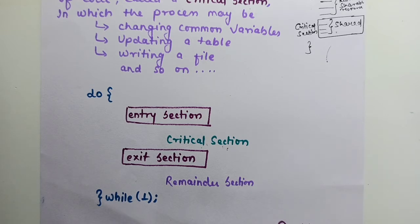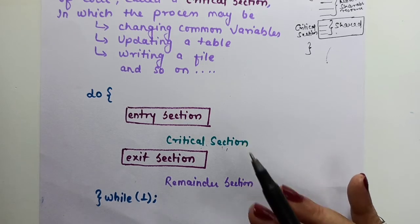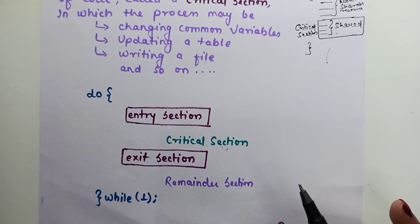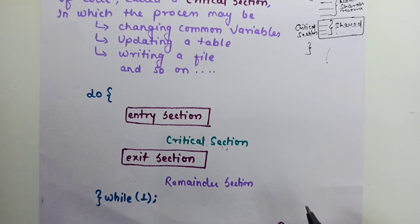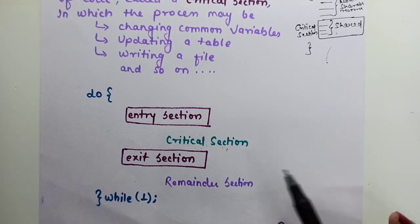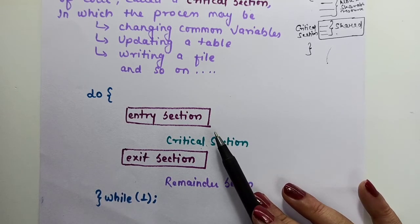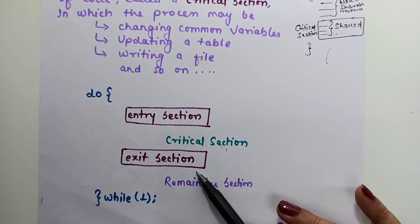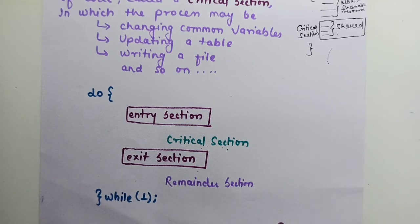The critical section problem is to design a protocol that cooperating processes can use to coordinate. Since cooperating processes share information, files, memory, or resources, there is a need for such a protocol. Each process must request permission to enter its critical section — that request happens in the entry section — and this may be followed by an exit section. The remaining code is the remainder section.